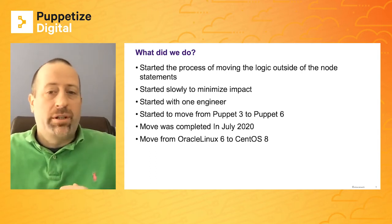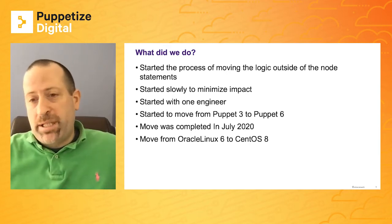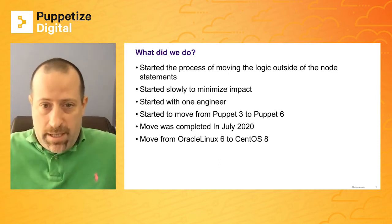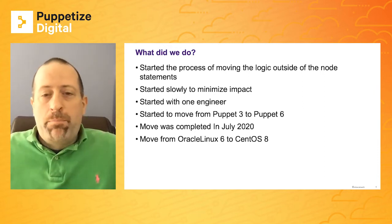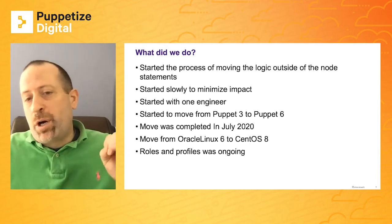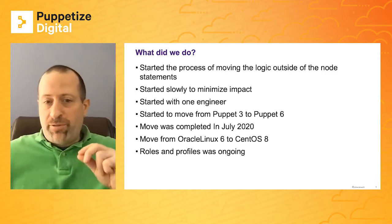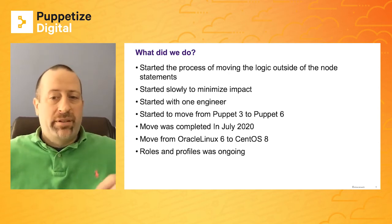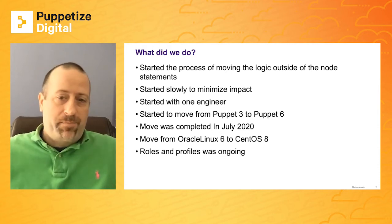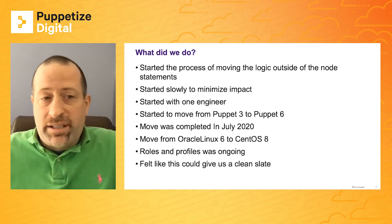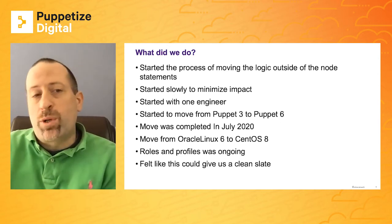There was an ongoing effort to move us from Oracle Linux 6 to CentOS 8. Shortly after the Puppet conversion was completed, there was a decision to accelerate that effort. The timeline presented was pretty aggressive, and this is where things really picked up speed. This started a ton of discussions — our roles and profiles conversion was ongoing, but we still hadn't taken full advantage of the roles and profiles pattern. We felt that we had a strong scaffolding in place which could allow us to make better use of roles and profiles when moving to CentOS 8. We also felt that this could give us a clean slate — we knew we were going to take on some tech debt, but we felt we could clean up more than we would take on.